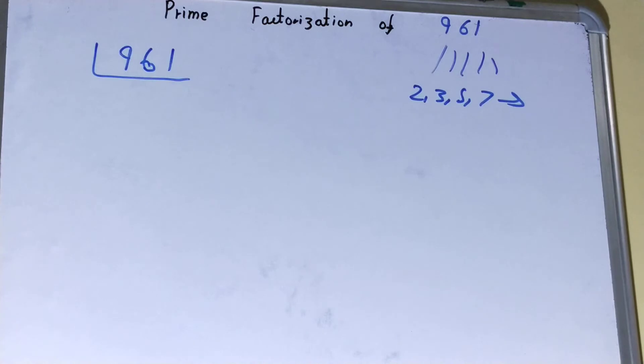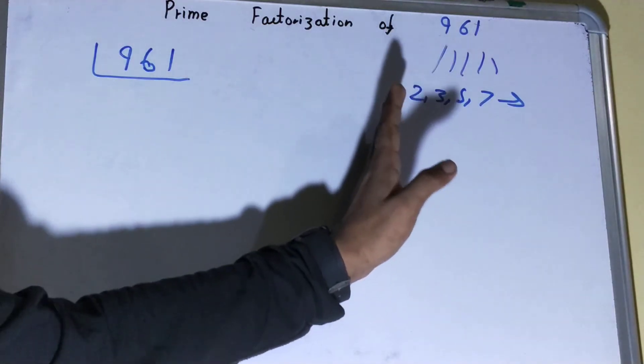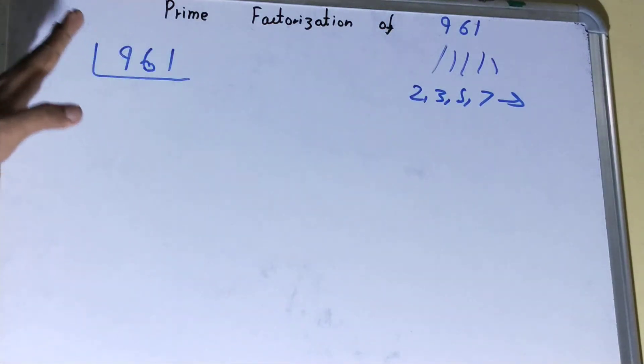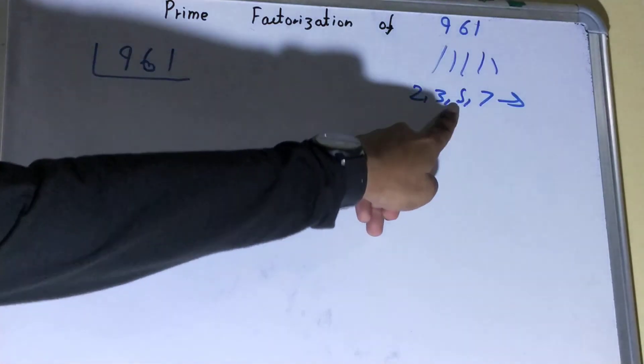Okay, so the normal process is you need to start from the lowest number, that is 2, and see whether you can divide this 961 or not. It will not. With 3, also it will not. With 5, also it